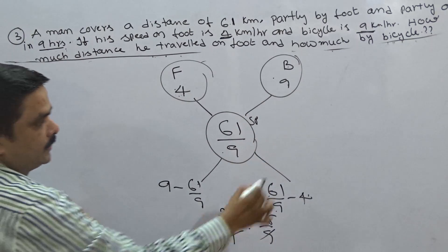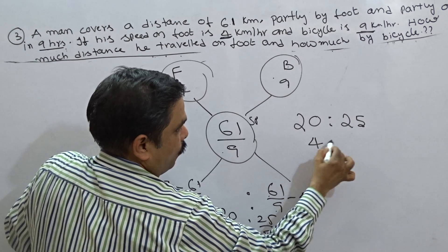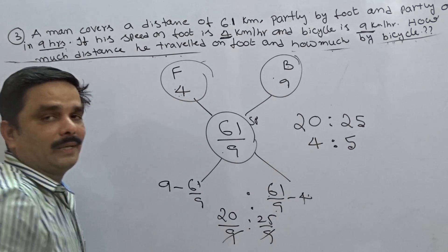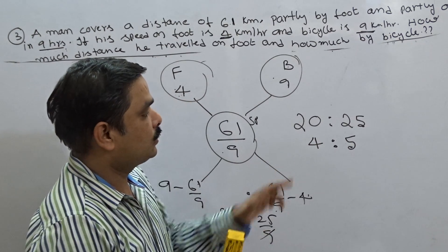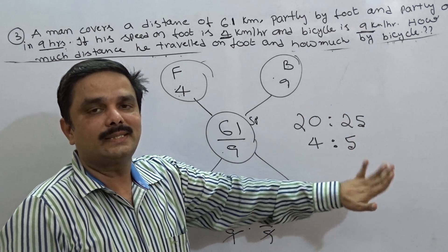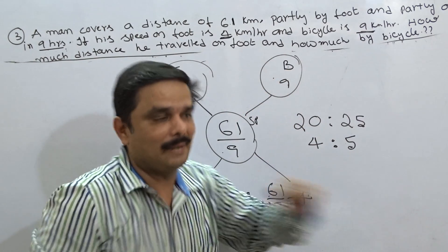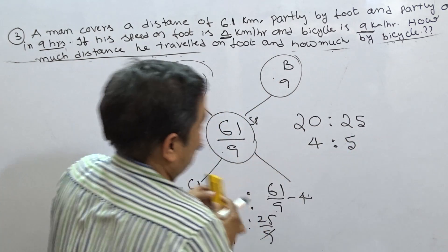Now, the ratio is 20 is to 25 or 4 is to 5. But observe, remember, 4 is to 5 is not the speed ratio. Obviously, this is time ratio. After rules of allegation, you will end up in time. Now, 4 is to 5 is the time ratio.